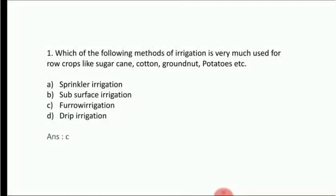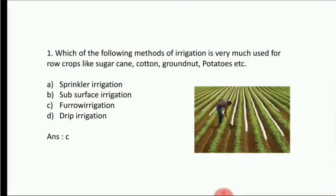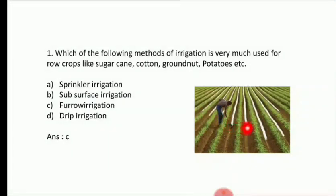Answer is Option C, furrow irrigation. For furrow irrigation, there are deep furrows and shallow furrows. Deep furrows are 20-30cm in depth. The furrows are water-filled, that's why it is called furrow irrigation.